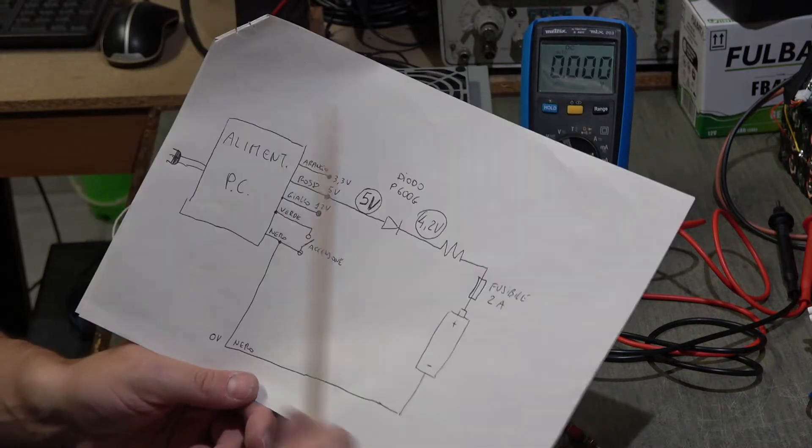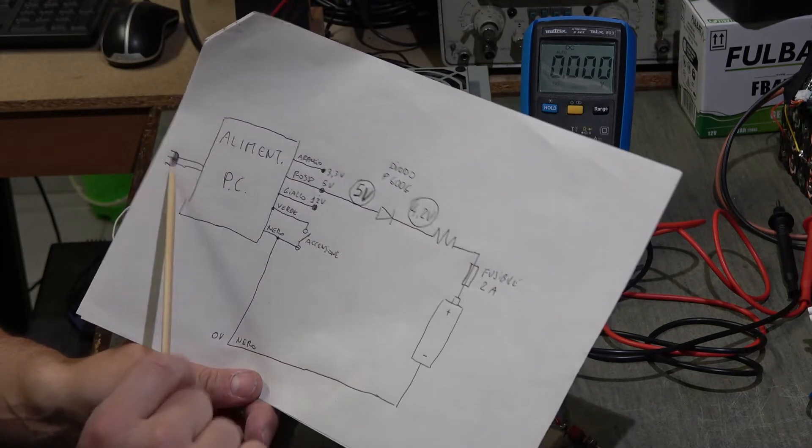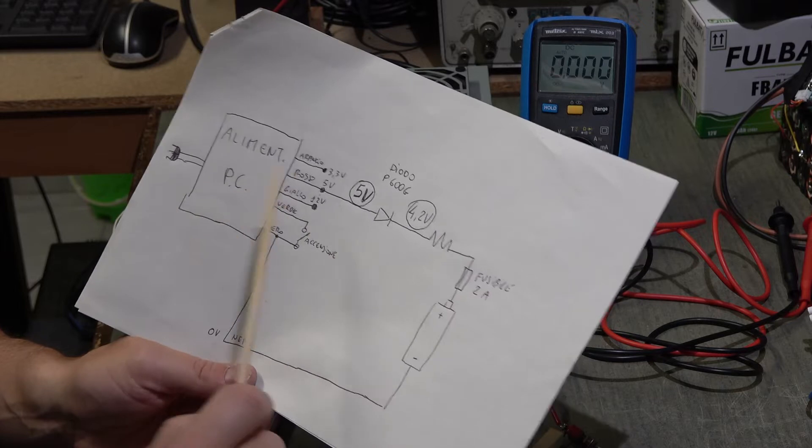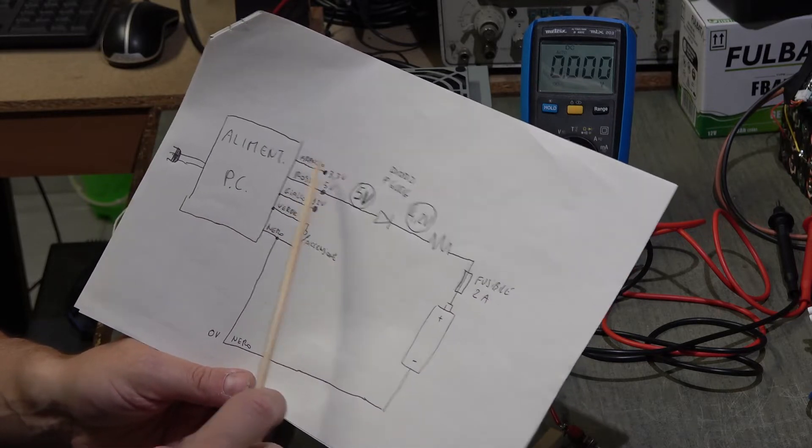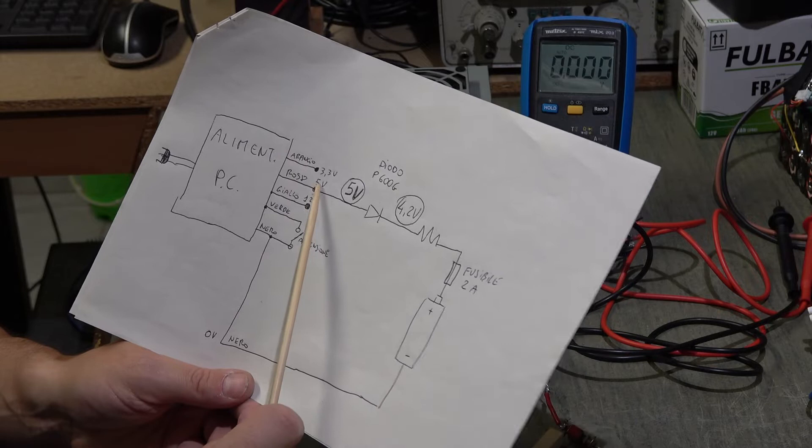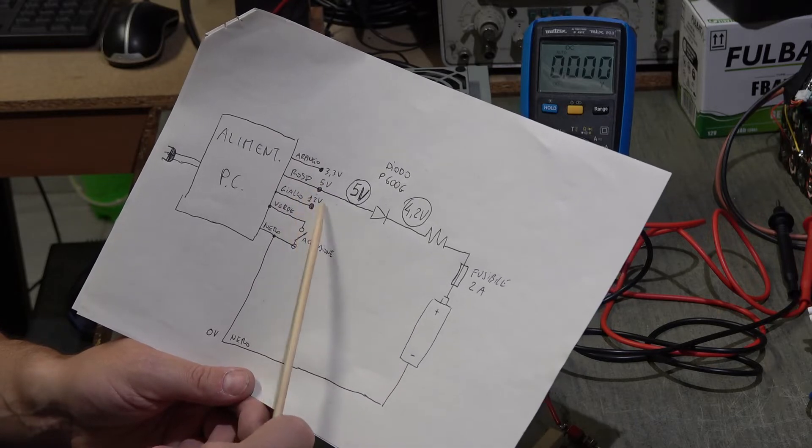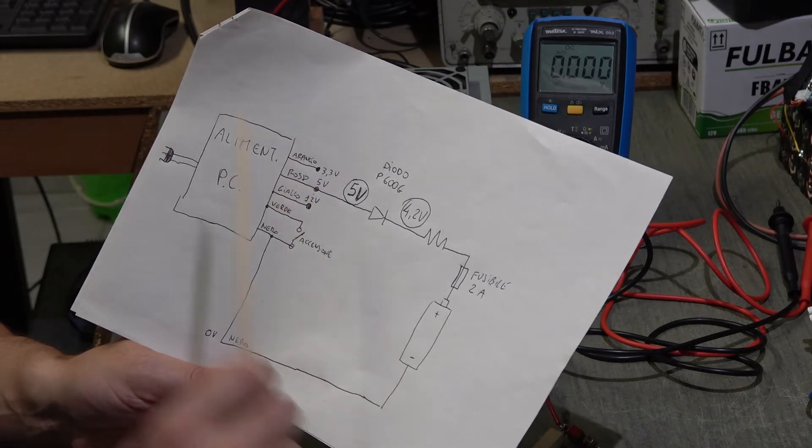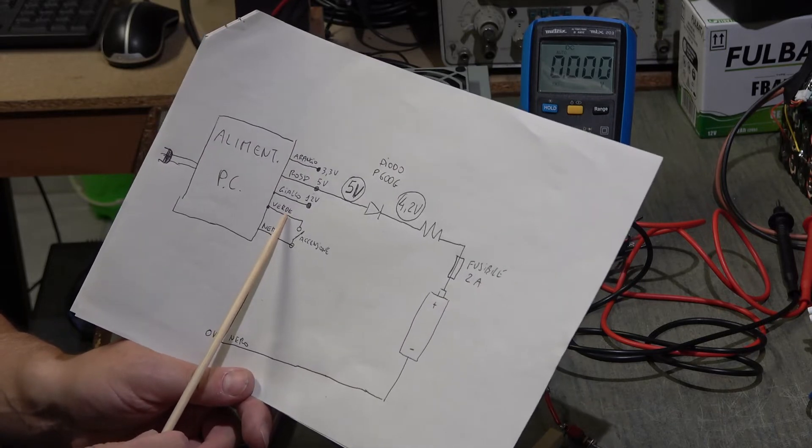These tensions: 3.3V on the orange wire, 5 volts on the red wire, 12 volts on the yellow wire. Then there is a black and a green that are the extension of the power from PC.